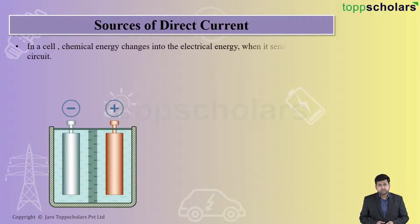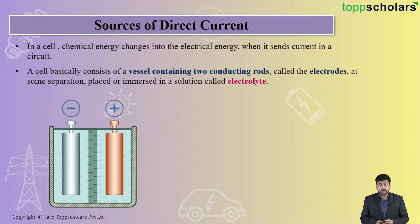So basically, when you consider a cell, the chemical energy changes into electrical energy when it sends current in a circuit. Now cells basically consist of a vessel which has two conducting rods, that is the electrodes, or you can also call it the anode and the cathode. And these electrodes are dipped in an electrolyte solution, most probably it's an acid. So this is nothing but electrolyte. So these two cathodes and anodes are dipped in electrolyte.